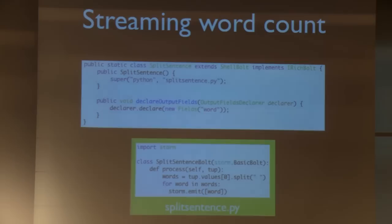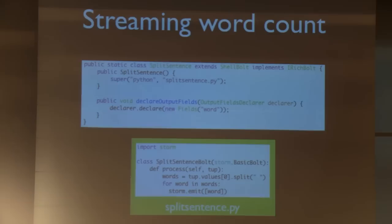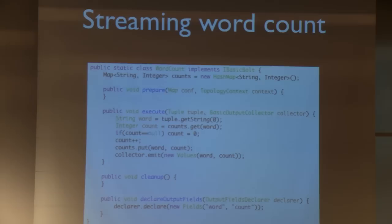Here's the implementation of SplitSentence — implemented in Python to illustrate Storm's multi-language capabilities. At the top there's a small wrapper class saying it's implemented in Python and which file implements it. The implementation is simple: every time it receives a tuple, it takes the first value (the sentence), splits it on whitespace, and emits one tuple for every word. Here's the WordCount implementation: it keeps an in-memory map from word to count. Whenever it receives a word, it updates the count in the map and emits the word and count to the output.